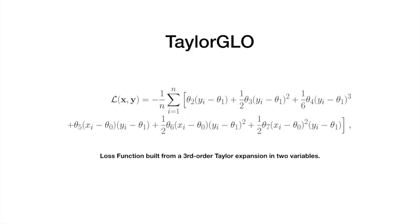Traditionally, researchers have been constrained to a narrow set of loss functions, such as the ubiquitous cross-entropy loss function. However, prior research introduced genetic loss optimization, also known as GLOW, and showed that there is in fact promise in evolving novel loss functions.